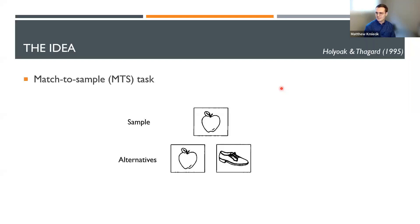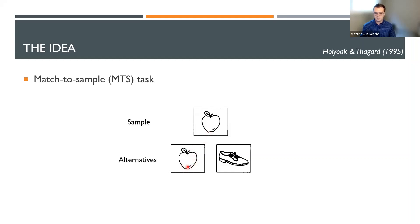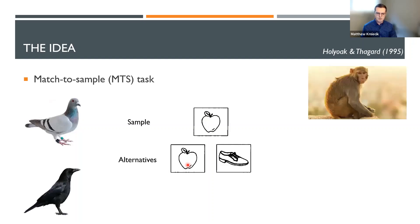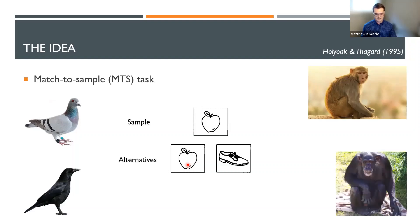Before I get to that phenomenon, I'd like to provide a little backstory from a chapter in Holyoak and Thagard's Mental Leaps, published in 1995, that goes through a series of match-to-sample conditions. In this basic match-to-sample task, we give participants — or subjects in comparative psychology, so different species of animals — a sample object and have them choose which of the alternatives on the bottom best matches the sample relationally. This is quite easy: pigeons, crows, lower primates, and chimpanzees are all successful at this task.